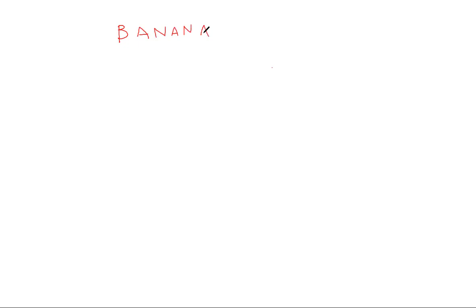We're going to have a look at Huffman encoding and how we would use frequency to make something a lot smaller in terms of compression. Let's start with 'banana' - it's quite a good word because it has repeated letters. We're going to add a space, represented by an underscore, and then 'coffee', because today is fueled by coffee.